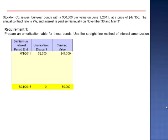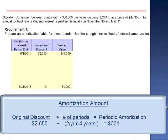Using the straight line method, this movement toward the par value is at an equal dollar amount per period. So if we take $2,650 and divide it by the eight periods, the carrying value will increase by $331 per period. We amortize the discount by a constant dollar amount, $331 per period.